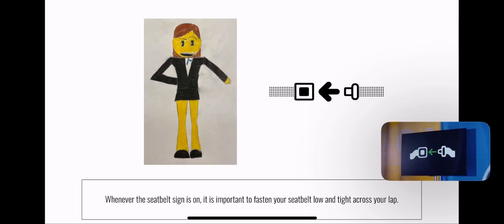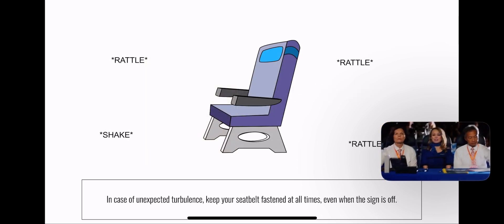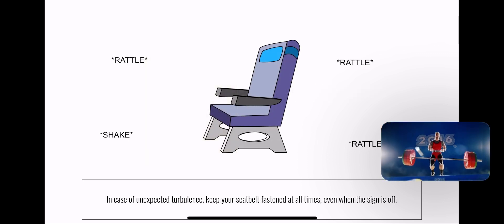When the seatbelt sign is on, your seatbelt should be fastened low and tight across your lap. In case of unexpected turbulence, keep your seatbelt fastened even when the seatbelt sign is off.